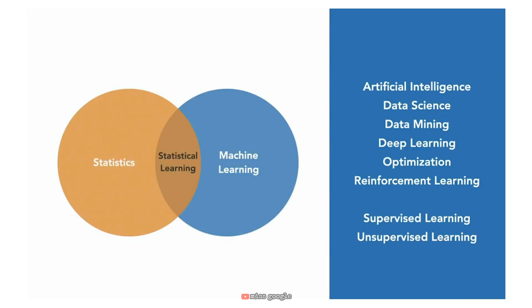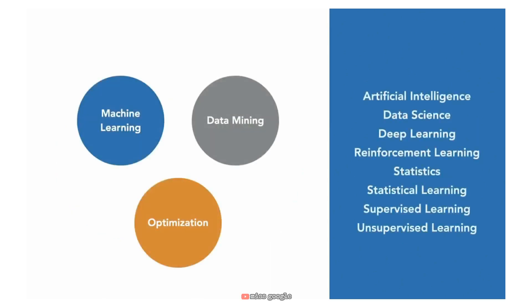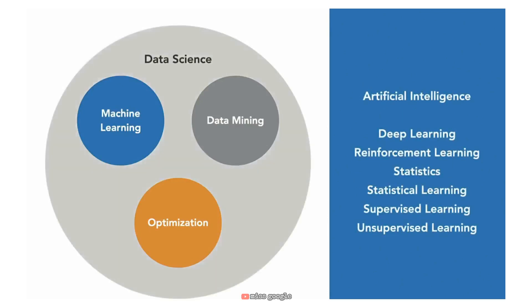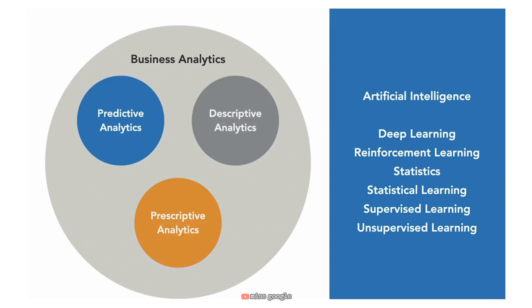Let's take a look at the terms machine learning, data mining, and optimization. These terms refer to approaches that are closely related — they represent different branches in the broad field of data science. Machine learning approaches are primarily focused on prediction, making predictions based on the known properties of data. Data mining, on the other hand, is focused on the discovery of previously unknown properties in data. In business analytics, machine learning is also known as predictive analytics, data mining as descriptive analytics, and optimization as prescriptive analytics.